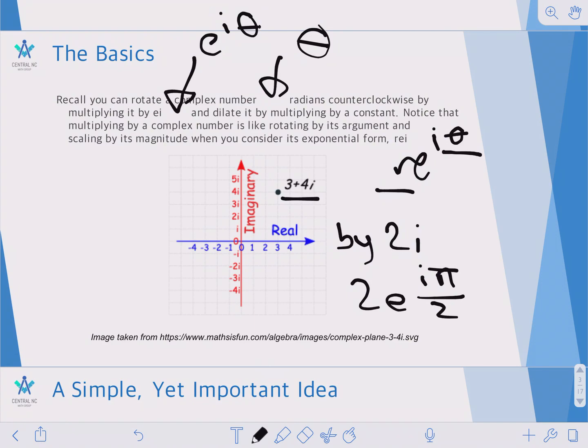what this is going to do is it's going to take 3 plus 4i, rotate it by 90 degrees counterclockwise, and then scale it by 2. So if we rotate by 90 degrees, we're going to get sent to minus 4 plus 3i.